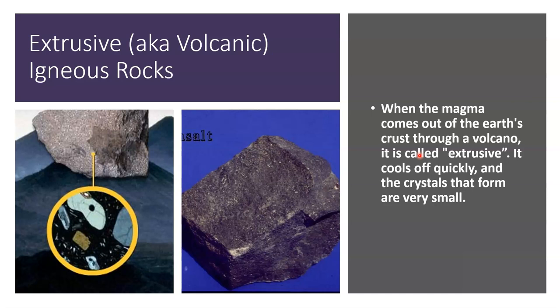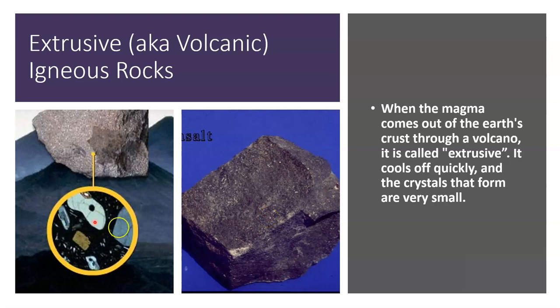Extrusive or volcanic igneous rocks form at the surface — they are erupted out of a volcano and then crystallize and cool on the surface. You see very small crystals; you don't see them with the naked eye, but with a microscope you can. Something like basalt: in hand specimen you wouldn't be able to see the crystals, but under a microscope you can. The crystals are too small to see without a microscope.